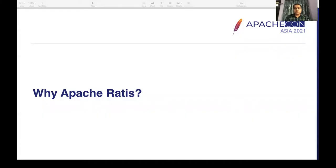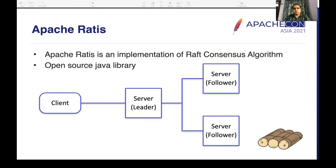Apache RATIS is an implementation of the Raft consensus algorithm. It's an open-source Java library actively being developed in the Apache community — contributions are welcome. Typically, a RATIS cluster has a leader elected from a quorum of nodes. The other nodes become followers. The leader is the central authority: clients send all requests to the leader, which validates requests, creates log transactions, and replicates those transactions to followers.